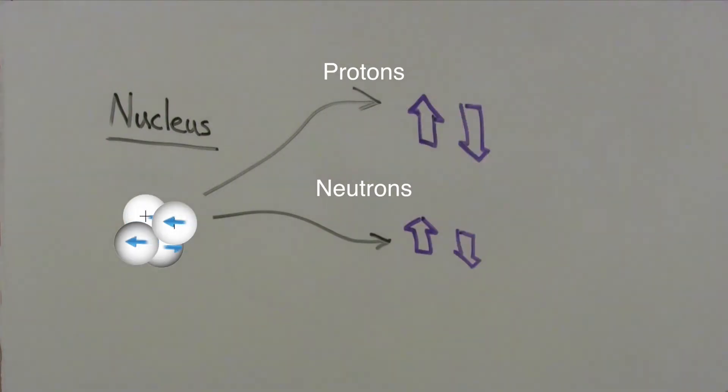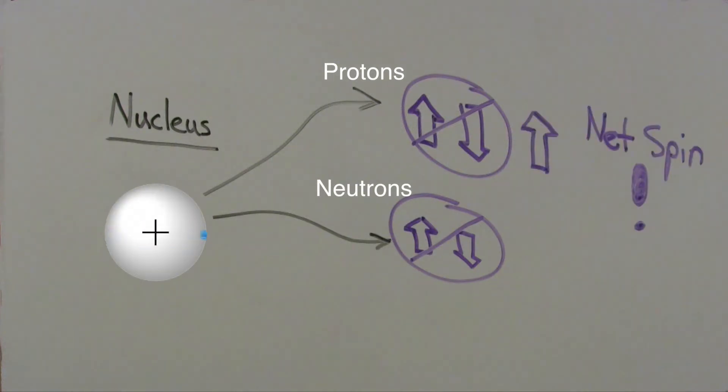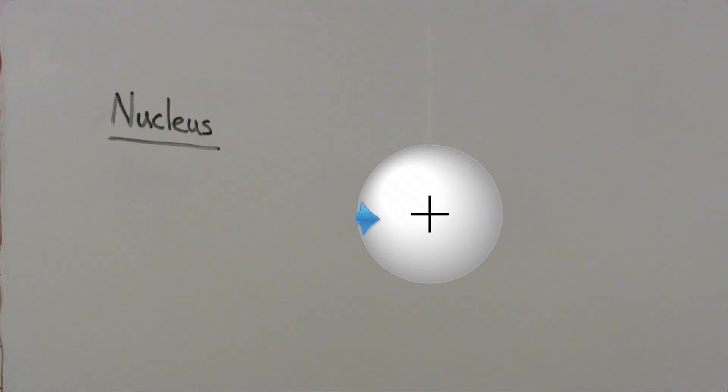As a nucleus accumulates these protons and neutrons, these spins cancel in pairs. So if a nucleus has an odd number of protons or neutrons, then it's going to have net spin because there will be an odd proton or neutron without a partner to cancel the spin. Any nucleus that has a spin also has a magnetic dipole moment, like a bar magnet. This is due to a positively charged particle in rotation.